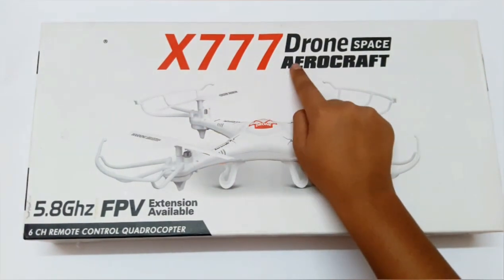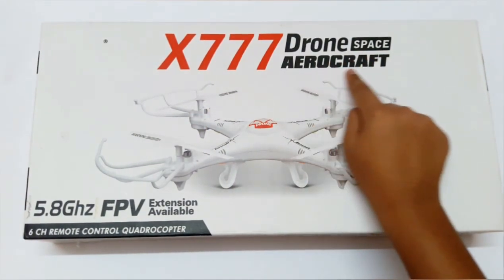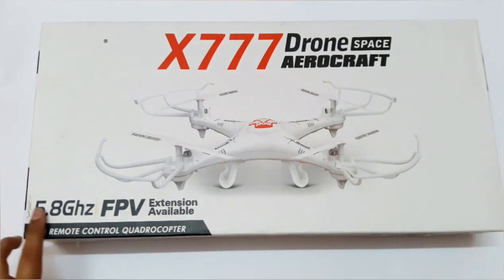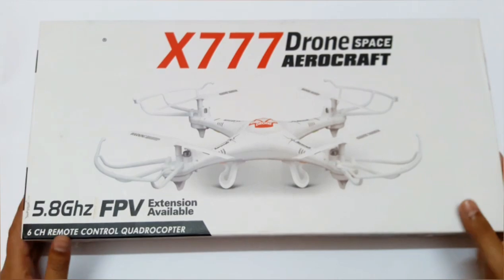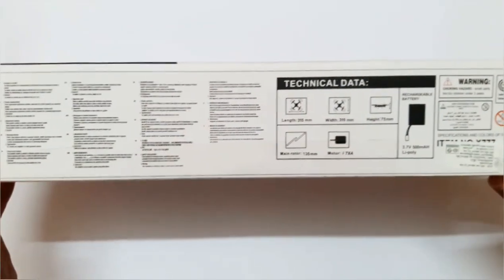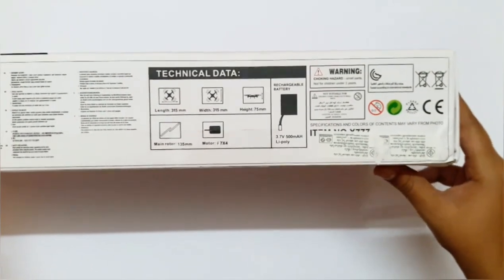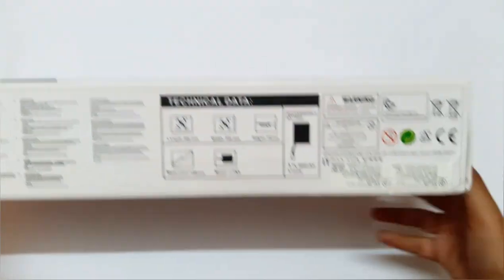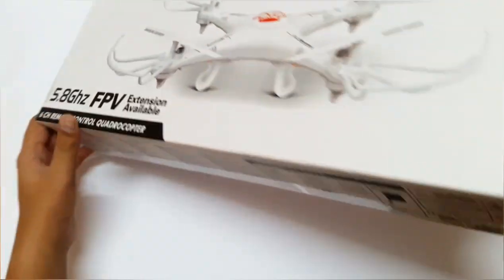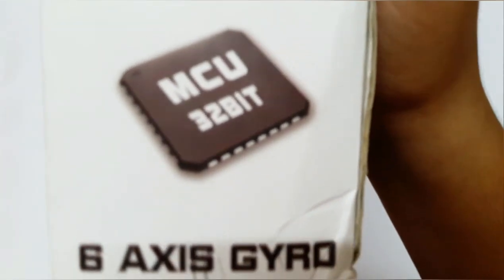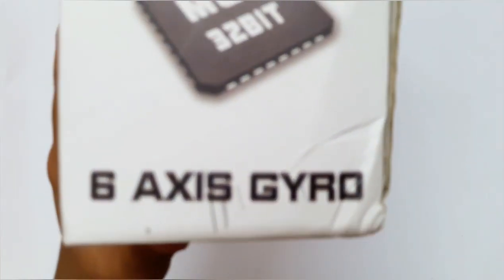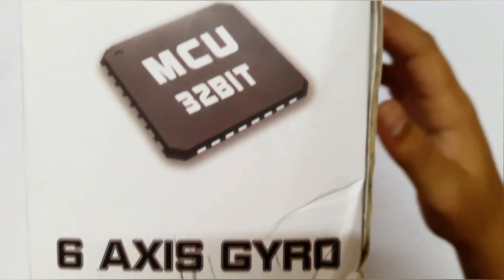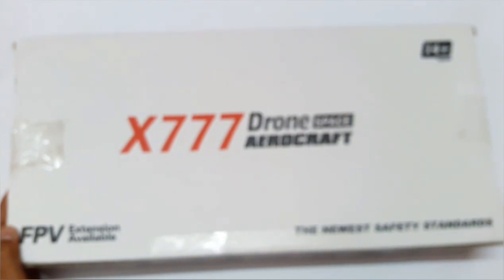Hi guys, welcome to my channel. In today's video, we are going to do the unboxing of this X777 Drone Space Aircraft. So let's begin. It is 5.8 gigahertz FPV extension available. Here are some technical data. I bought it from Thailand, Bangkok. It is 6-axis gyro, MCU is 32-bit.